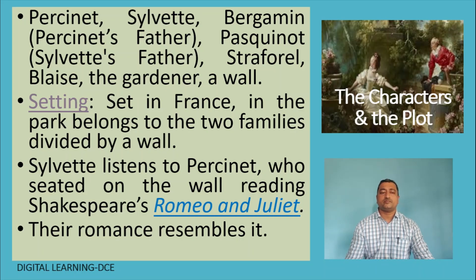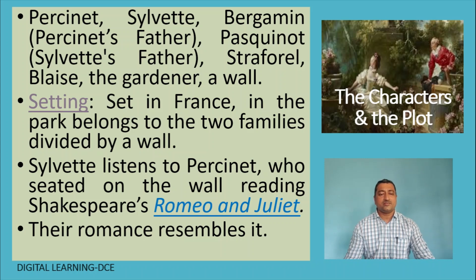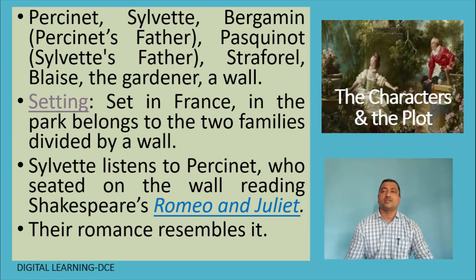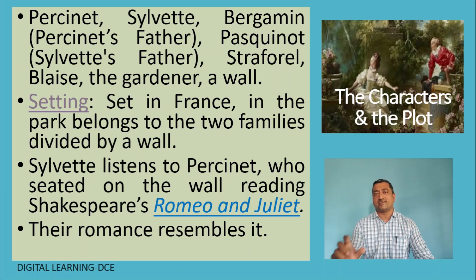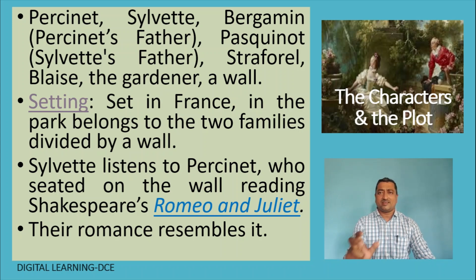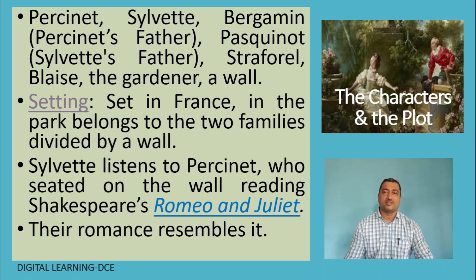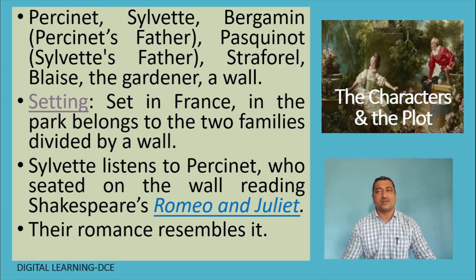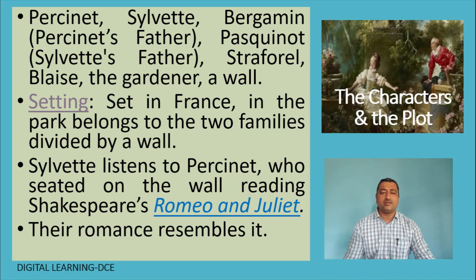The setting is in the park belonging to the families. The opening scene shows Silvette listening to young Persinet, who is seated on the wall reading Shakespeare's Romeo and Juliet. This is important because Romeo and Juliet — the full title is The Tragic History of Romeo and Juliet, written in 1594 by William Shakespeare — tells the tragic love story of Romeo and Juliet, ending with both their deaths. The tragic element is imitated here as a comedy. The romance between Silvette and Persinet resembles that of Romeo and Juliet, but it doesn't end in tragedy the way that famous play did.